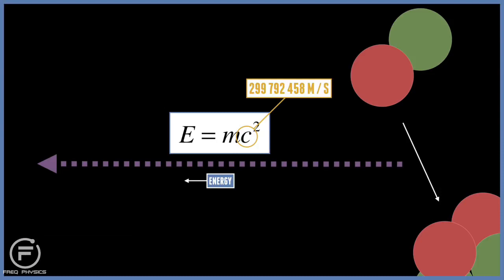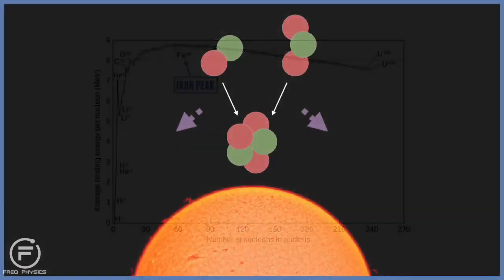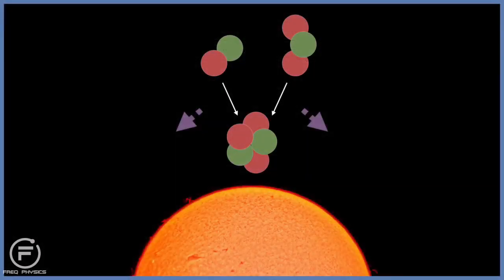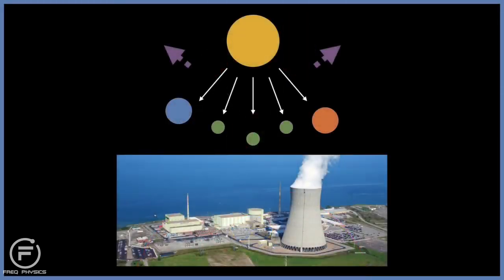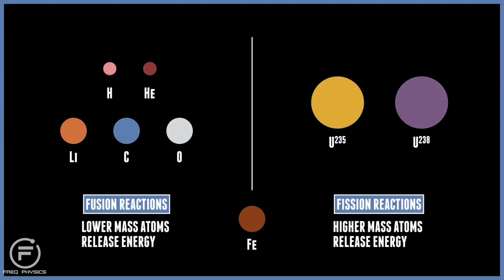Putting two small atoms together to make one bigger atom releases energy, and this can happen to the mass of an iron atom. The fusion of smaller atoms is what produces the energy in stars, like our sun, and splitting apart a bigger atom to make two smaller atoms releases energy for atoms that are more massive than iron. This fission of large atoms is what produces the energy in nuclear power plants. This means that low mass atoms release energy by fusion reactions, and higher mass atoms release energy by fission reactions. The iron atom seems to fall between these two groups. This is because no nuclear reaction involving iron can release energy.